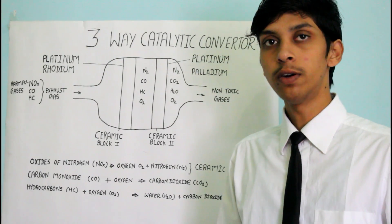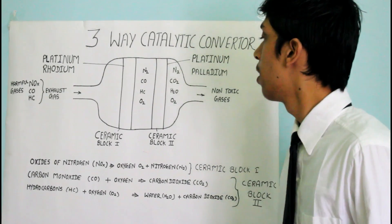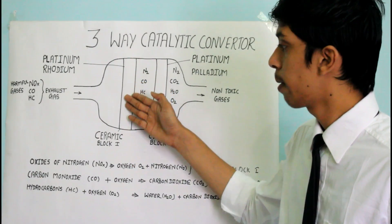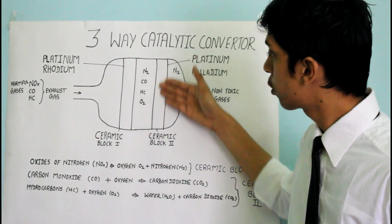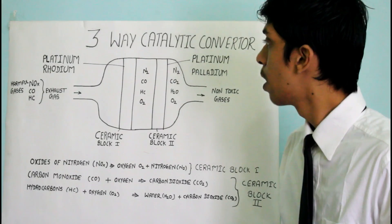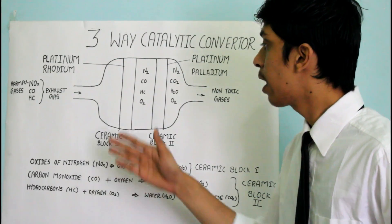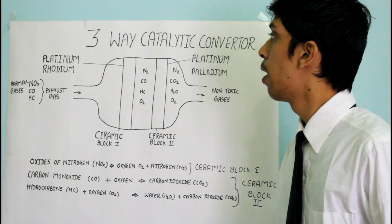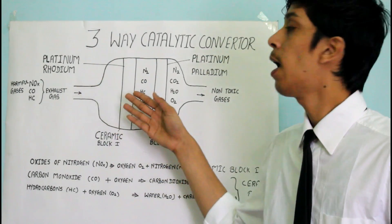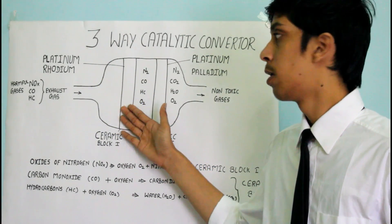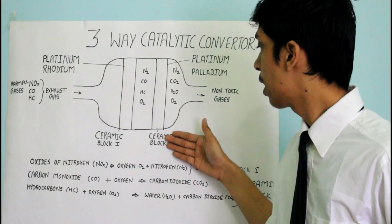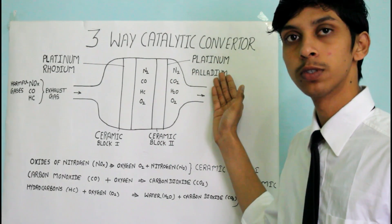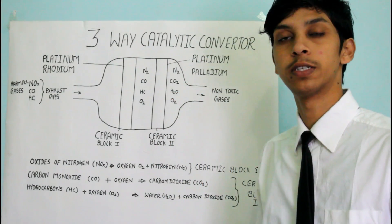Inside the catalytic converter we have two ceramic blocks — ceramic block one and ceramic block two. In ceramic block one, micro ducts of platinum and rhodium are present, and in ceramic block two, platinum and palladium are present.